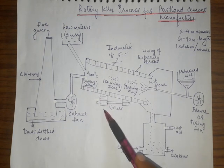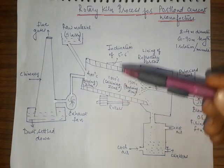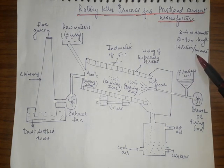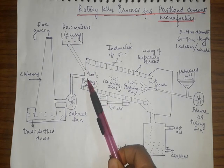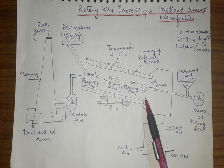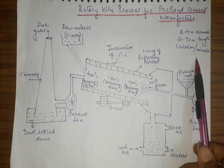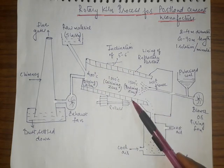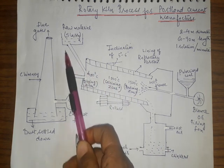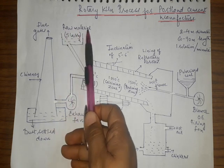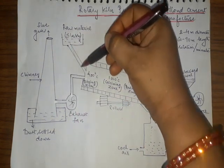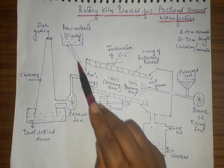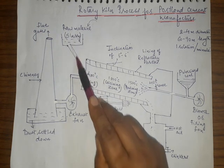The kiln is subjected to rollers that continually rotate it at one rotation per minute. This rotation causes the raw materials to slowly move through the various stages of heating. Raw materials or slurry are fed into the rotary kiln from a silo on the left side, whether in slurry form from wet process or dry form from dry process.